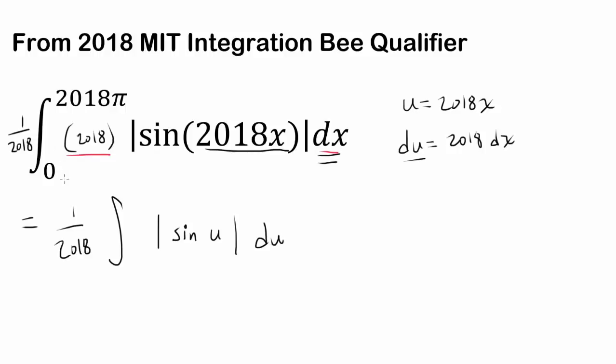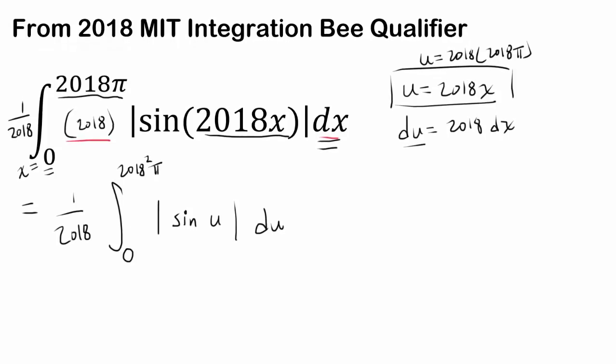Now, what about the bounds? Well, we are going from x equals 0 to 2018π, and we know u equals 2018x. So, when x is 0, we know u is going to be 0, because 2018 times 0 is 0, and when x is 2018π, our u is going to be 2018 times 2018π, or 2018 squared times π. So we have this expression right here.